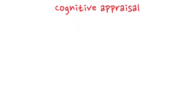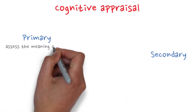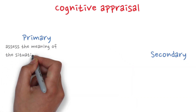Hey, today we will talk about cognitive appraisal according to the transactional model of stress. Cognitive appraisal can be split into primary and secondary appraisal. Let's start with primary appraisal. When we first encounter a potentially stressful event, we first try to assess the meaning of the situation for our well-being.